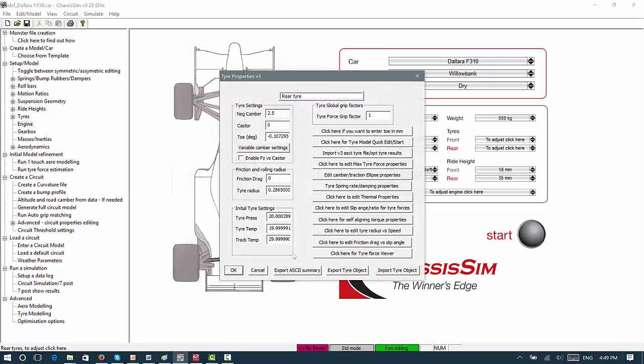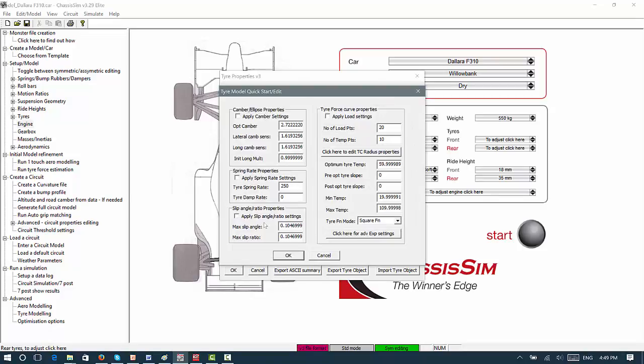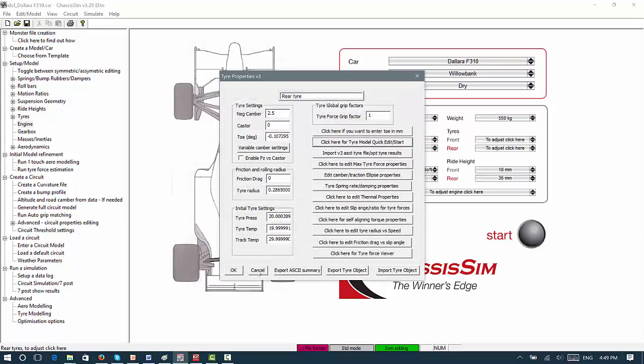And if you're finding that there's a real, that the, if you've got a very aggressive diff, but the steer isn't quite matching up, a big thing to play with is this max slip ratio. So for example, if I had a very aggressive diff, but I was hardly getting any induced understeer on the diff, as a rough rule of thumb, I would drop that max slip ratio to about 0.05, and click on OK to apply those settings.